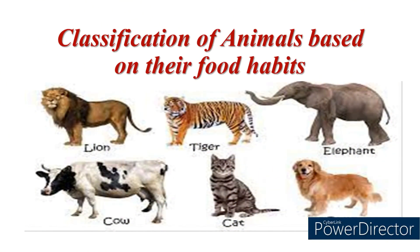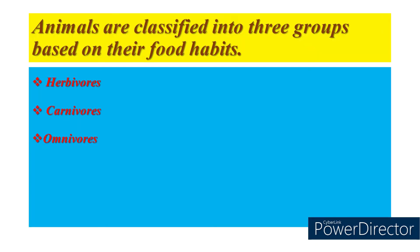Classification of animals based on their food habits. Animals are classified into three groups based on their food habits. They are herbivores, carnivores, and omnivores.